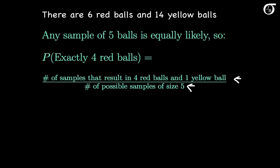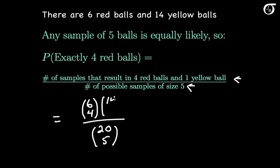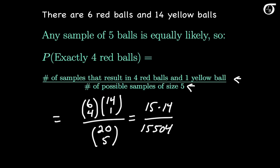Recall that there were 6 red balls and 14 yellow balls, for 20 balls in total. The total number of possible samples is 20 choose 5 — the number of ways of picking 5 balls from 20. In the numerator we need the number of ways of getting 4 red balls and 1 yellow ball. There are 6 red balls and from those we must pick 4, and there are 14 yellow balls and from those we must pick 1. So 6 choose 4 times 14 choose 1 over 20 choose 5, which works out to 15 times 14 over 15,504, or 0.01354 to 5 decimal places.